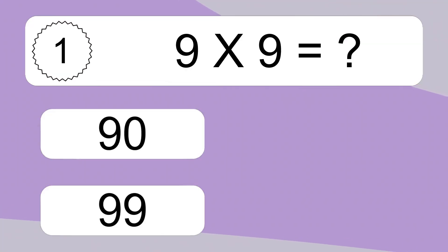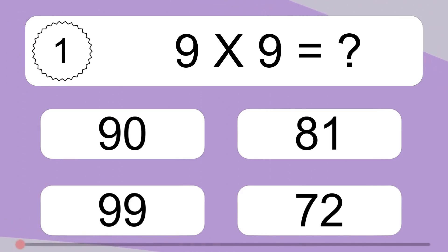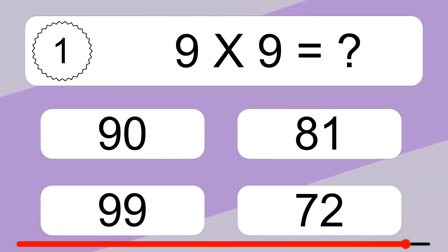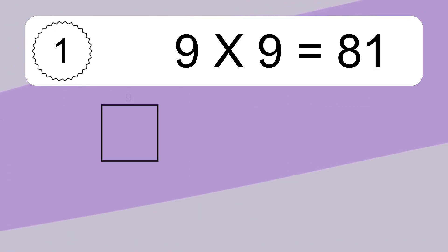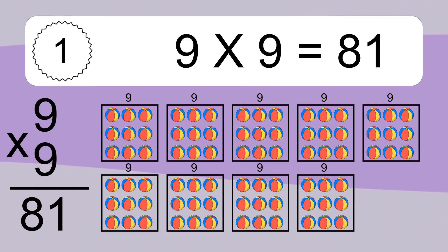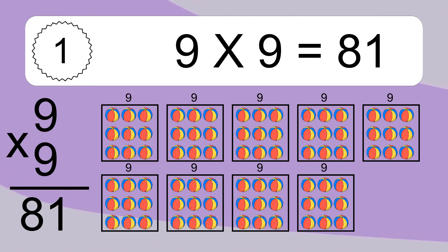9 times 9 equals what? 9 times 9 equals 81. We have 9 boxes and each box has 9 colorful balls inside. If you count all the balls in all the boxes together, you will have 9 times 9 balls. This equals 81 balls.